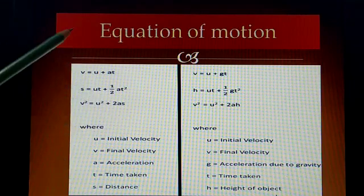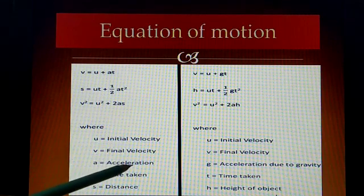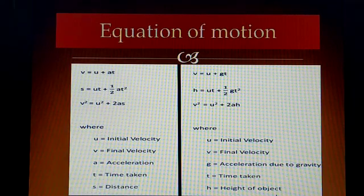All the terms: U is the initial velocity, V is final velocity, A is the acceleration, T is the time taken, and S is the distance.